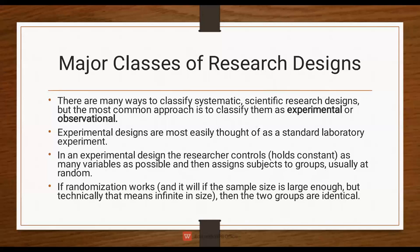There are many ways to classify scientific research designs, but the most common approach is to classify them as experimental and observational. In an experimental design, the researcher controls and holds constant as many variables as possible and then assigns subjects to groups, usually at random.